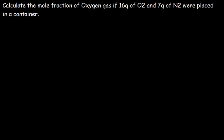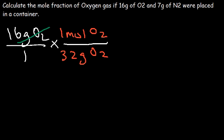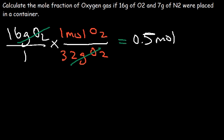Let's try a practice problem. We need to find the mole fraction of oxygen gas given the mass of O2 and N2, so let's convert grams into moles. Starting with 16 grams of O2: the molar mass of O2 is 16 times 2, which is 32 grams per mole. One mole of O2 has a mass of 32 grams, so 16 divided by 32 is 0.5 — we have 0.5 moles of oxygen gas.